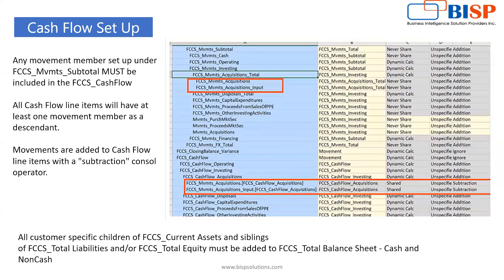For every member we have a sub-member, which is a sort of shared member, and it will reverse the sign of the amount or whatever data we feed in. All custom members — specifically children of FCCS Current Asset and siblings of FCCS Total Liability or FCCS Total Equity — must be added to FCCS Total Balance Sheet Cash and Non-Cash. It is advisable that we should not disturb the hierarchy, though we can add members in the movement dimension hierarchy.